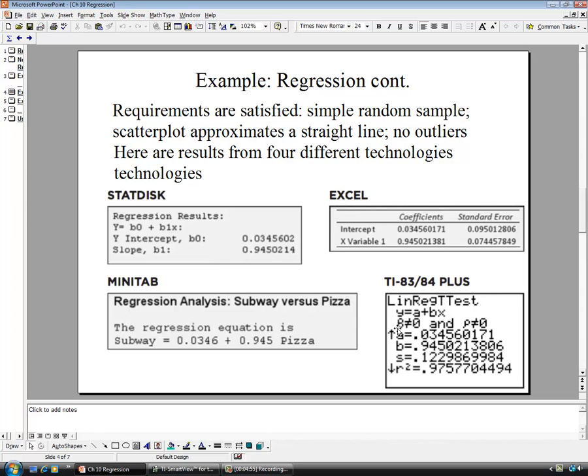It's telling you that the beta doesn't equal 0 as our alternative hypothesis. That is the same as this test here. This is rho, the actual population correlation coefficient. So our r value will estimate that. The test is the same, whether or not we're testing for slope equaling 0 or not equaling 0, or there being no correlation versus a correlation.